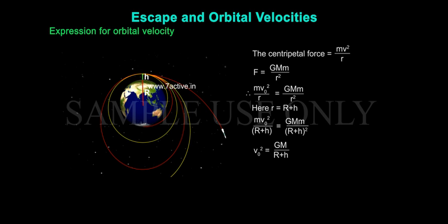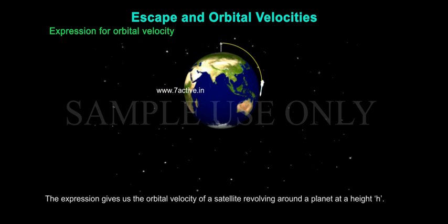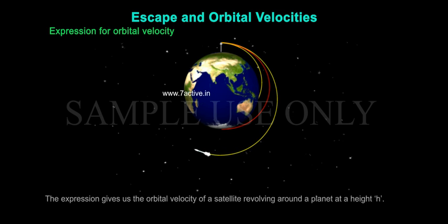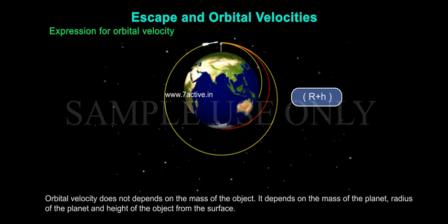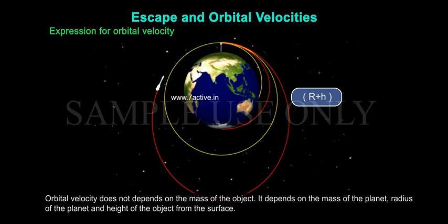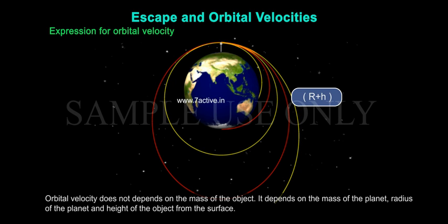V0² = GM / (R + H). This expression gives us the orbital velocity of a satellite revolving around a planet at a height H. Here, R + H is called the orbital radius. Orbital velocity does not depend upon the mass of the object; it depends on the mass of the planet, the radius of the planet, and the height of the object from the surface.